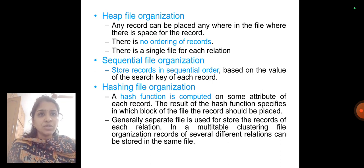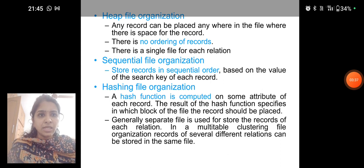Sequential file organization: store records in sequential order based on the value of the search key of each record. Hashing file organization: a hash function is computed on some attribute of each record. The result of the hash function specifies in which block of the file the record should be placed. Generally, separate files are used to store the records of each relation. In a multitable clustering file organization, records of several different relations can be stored in the same file.